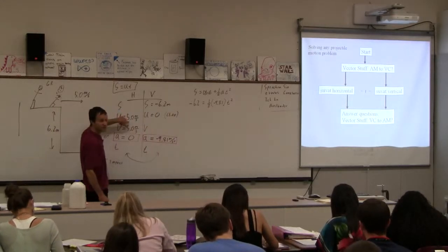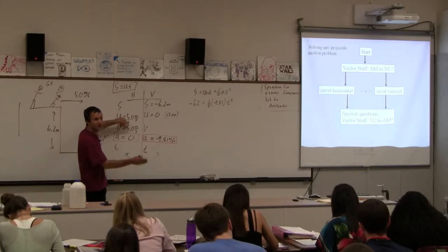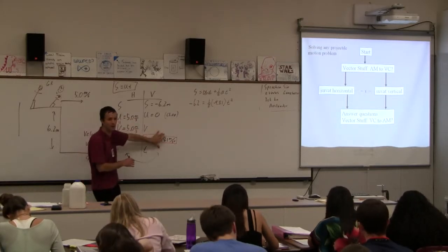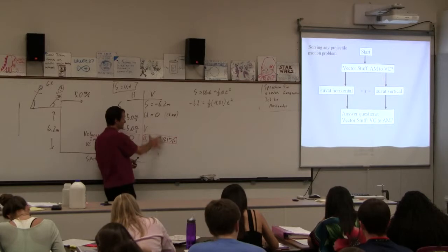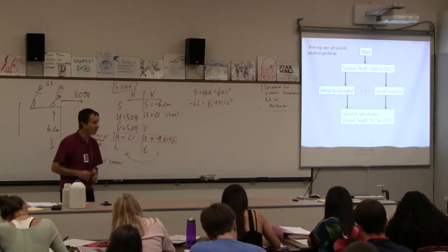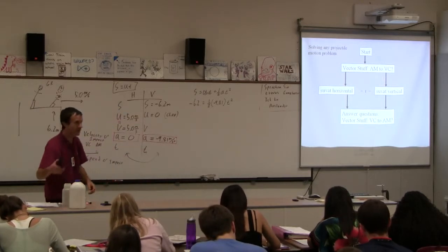Notice I didn't use the 5 as the initial velocity because that's on the other side, right? I can't use that with 9.8. I have to keep, I have to use this side or this side. They're independent. They do not affect each other. There is no effect.